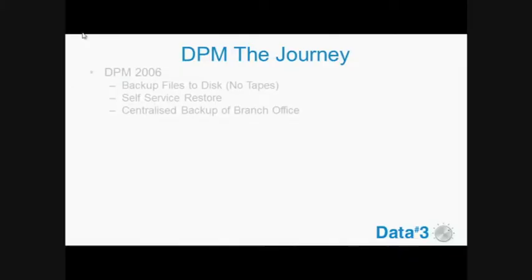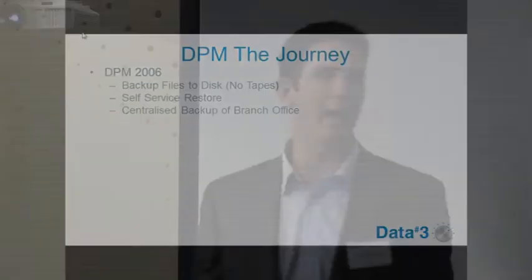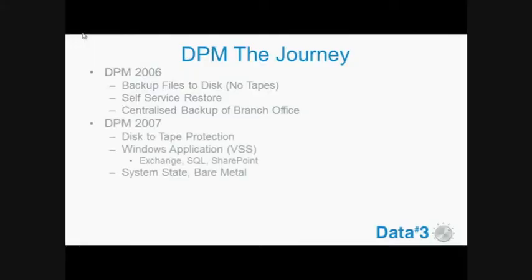So the journey. In 2006, Microsoft brought out DPM, and it was really a tool that enabled us to get all of our files from our branch offices back into our head office so that we could back them up. Prior to that, we would implement solutions using DFS — DFS would replicate content from our branches back into our central location so that we could back them up. But that wasn't a backup solution. So in 2006, we could do that natively. It didn't support backing up from disk to tape, but it provided self-service restore capabilities.